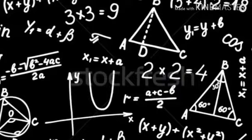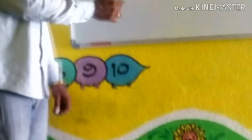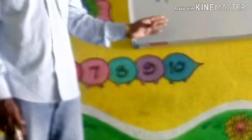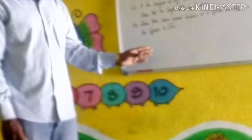20th Question: Find value of k if lines joining the origin to the points of intersection of curve 2x square minus 2xy plus 3y square plus 2x minus y minus 1 equal 0 and line x plus 2y equal k are mutually perpendicular.